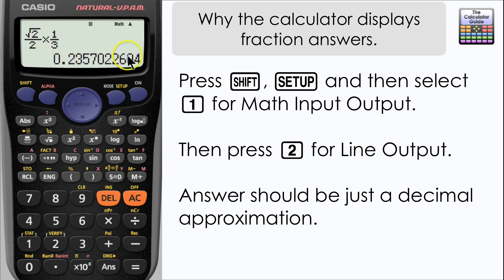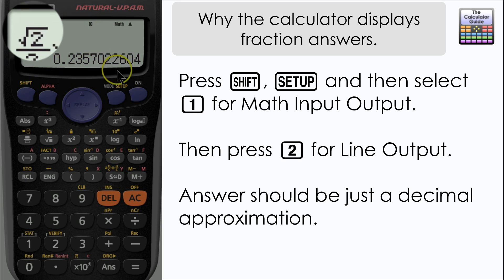So for calculations like this, even if I press SD, it's not changing it to a fraction now. I think this is more to do with the fact that we have a radical or a surd on the top there, that's square root 2.